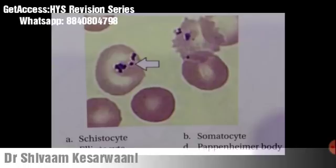Post-splenectomy, you can see Howell-Jolly bodies — in place of iron deposits, you see DNA inclusions. Howell-Jolly bodies are seen in asplenia, hyposplenia, and severe hemolytic anemia. Summary: Heinz bodies are hemoglobin inclusions seen in oxidant drugs, G6PD deficiency, unstable hemoglobin; Pappenheimer bodies are iron inclusions in thalassemia and sideroblastic anemia; hemoglobin H inclusions in hemoglobin H disease; basophilic stippling (ribosomal inclusions) in lead poisoning, thalassemia, sickle cell disease, and MDS.